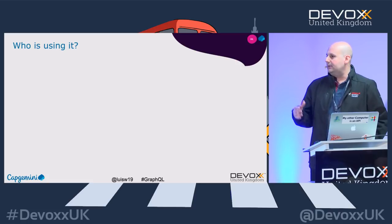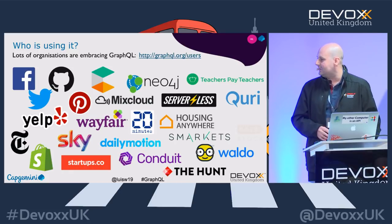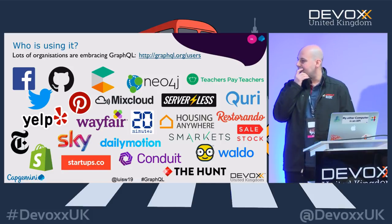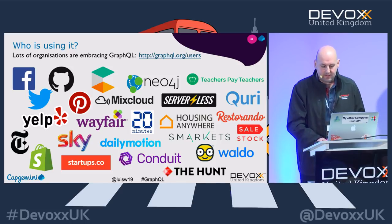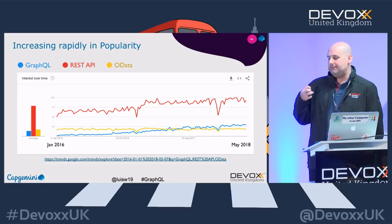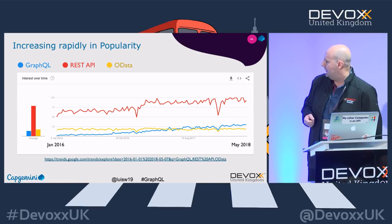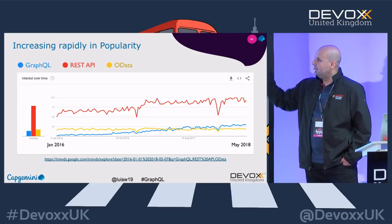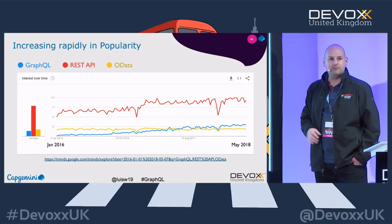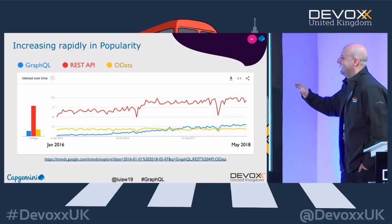Who's using GraphQL? We know Facebook obviously, because they created it. GitHub already mentioned. But there's a whole bunch of organizations already using it — it's all public on their website. It's getting a lot of popularity, and that's why you're here I would imagine. Does anyone know what OData is? Keep it that way. SAP uses OData, for example — it's kind of a REST-ish way of doing things, not quite.